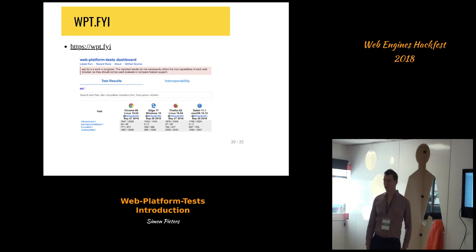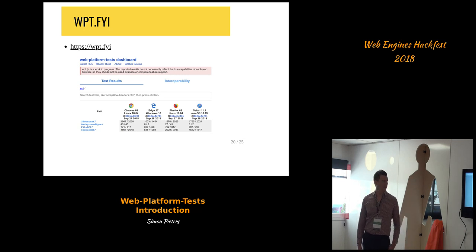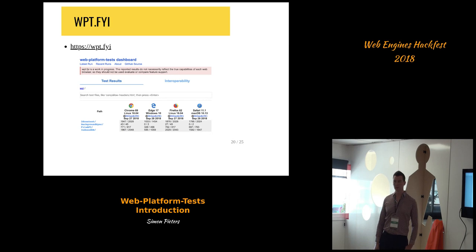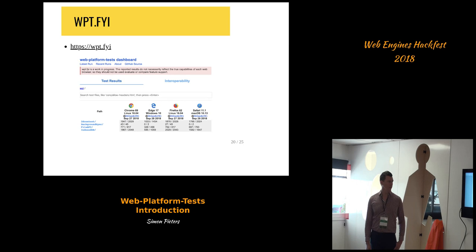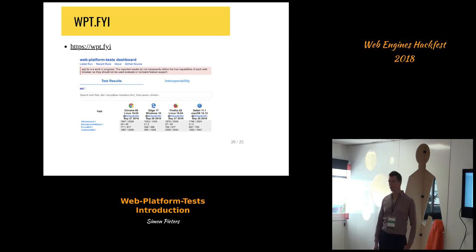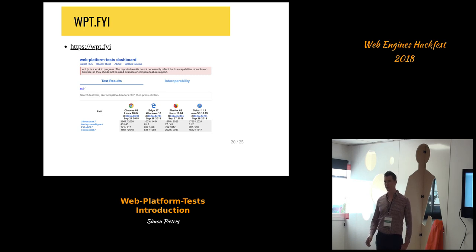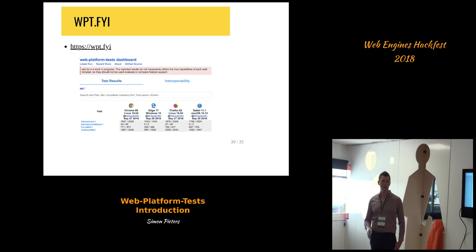WPT.fyi has different views: one shows test results with pass rates for each browser, and the other is an interoperability view with columns showing how many tests are passing in all browsers versus failing in all browsers and everything in between.